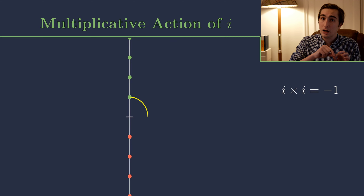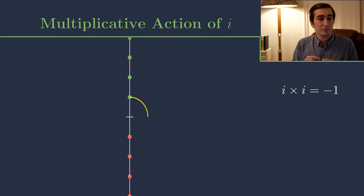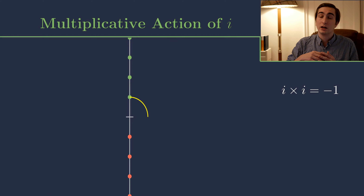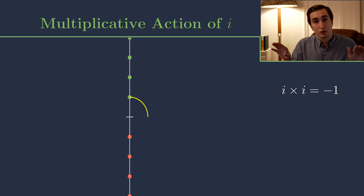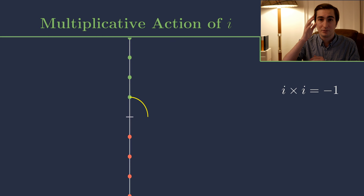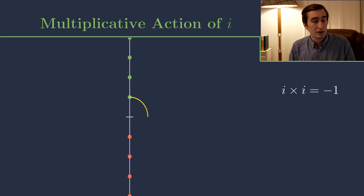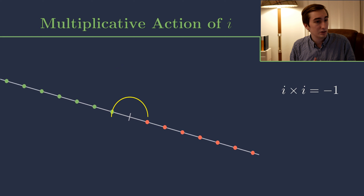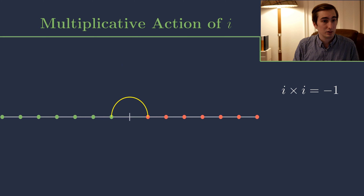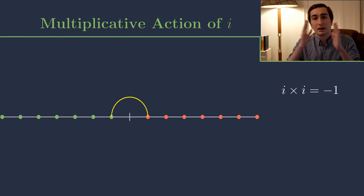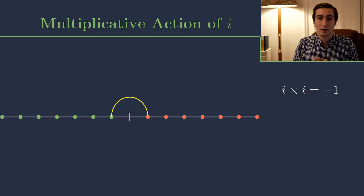It's not much of a stretch to think that we should consider i as a rotation by 90 degrees. So the action of i on the real number line in this multiplicative way is simply rotating the whole real number line by 90 degrees. In other words, i and all the imaginary numbers lie on an axis perpendicular to the real number line — we have another number line, the imaginary number line, lying perpendicular to the real one. We can check: doing i twice, two actions of 90 degrees, indeed corresponds to minus 1.